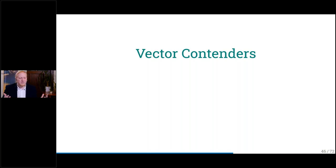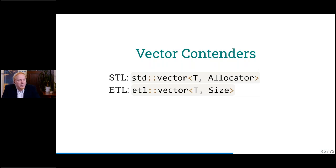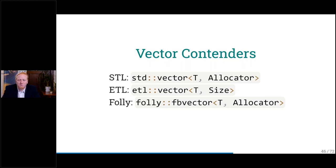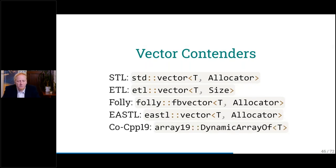For vectors, we don't even have to write code because there are a lot of implementations out there. We have the STL one available everywhere. Then there's the ETL — the Embedded Template Library — which has a vector with an upper limit. Then there's Facebook's version — the FB vector — with the same signature as a standard vector. There's also an EASTL version from EA, the game studio. And I also wrote my own version of the vector just to see how much I can optimize it and whether I can beat everyone in the field.